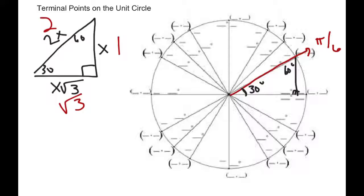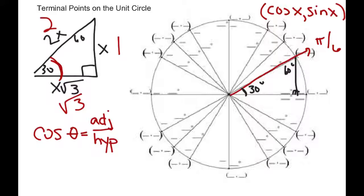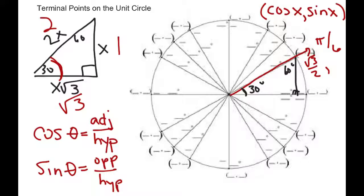In the ordered pair where the point hits the unit circle, the first value is always the cosine of the angle and the second value is always the sine. Cosine is adjacent over hypotenuse. So for the 30-degree angle, or pi over 6, cosine — adjacent over hypotenuse — is square root of 3 over 2, and the sine — opposite over hypotenuse — is 1 half. So the ordered pair where the terminal ray hits the unit circle is (√3/2, 1/2).